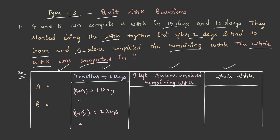A completes the work in 15 days, so the part of work done by A in one day is 1/15. Similarly, B completes it in 10 days, so B's one-day part is 1/10. It is given that they started the work together but worked together for only two days.